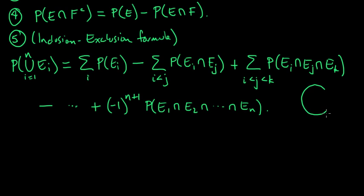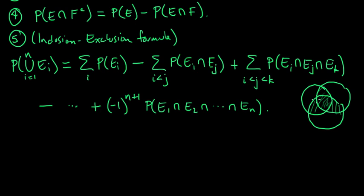Here's a hint for how to think about inclusion-exclusion. If you have three sets, you sum their individual probabilities, but then you've over-counted, so you subtract off the pairwise intersections. But then you've subtracted a little too much, so you add back the part you subtracted one too many times — which is the intersection of all three. That's the inclusion-exclusion principle.